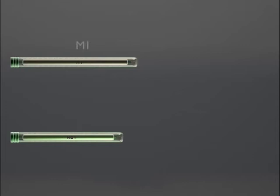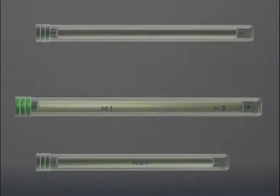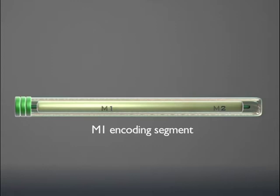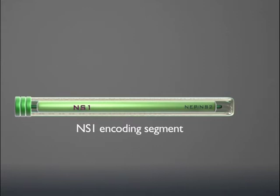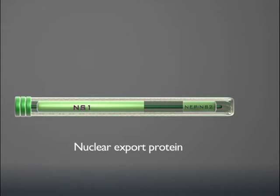The RNA segments encoding the matrix protein M1 and NS1 also encode two additional proteins. These can only be produced when eventually the messenger RNA corresponding to the segment encoding M1 is spliced. Consequently, a section of it is removed and the resulting shortened genome encodes M2, a protein with ion channel activity. Similarly, the messenger RNA corresponding to the genome coding for NS1 is spliced to encode the nuclear export protein NEP.